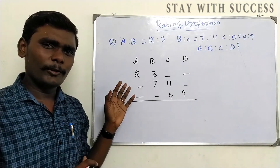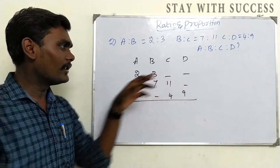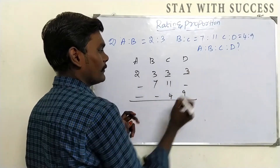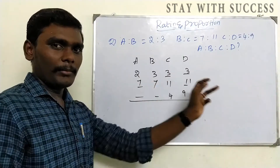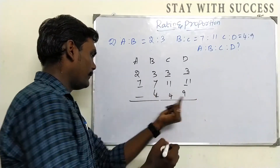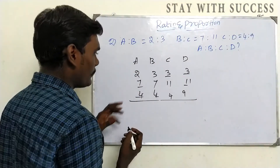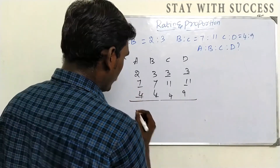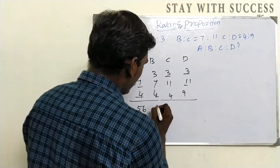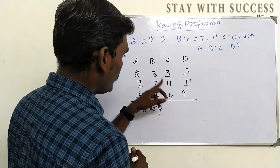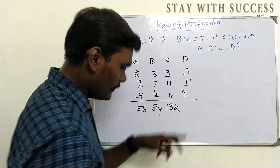We fill out the numbers across all positions. Here the values are 11, 11, 7, and 4. Multiply vertically: 2 × 7 = 14, so A = 14 × 4 = 56. 3 × 7 = 21, 21 × 4 = 84. 3 × 11 = 33, 33 × 4 = 132. 3 × 11 = 33, 33 × 9 = 297.